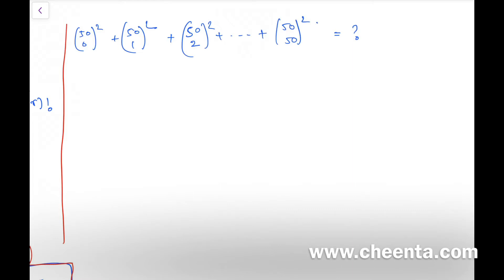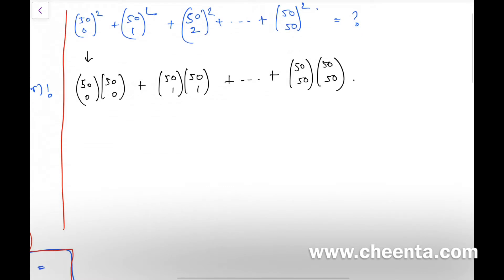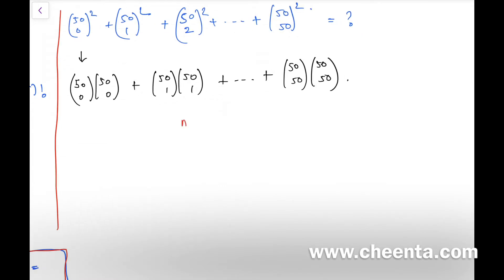First, let's split this into two portions. (50 choose 0)² can be written as (50 choose 0) × (50 choose 0), (50 choose 1)² as (50 choose 1) × (50 choose 1), and the last one (50 choose 50) × (50 choose 50). Now, you have seen that we found this very important identity: n choose r equals n choose (n-r) in the previous problem.